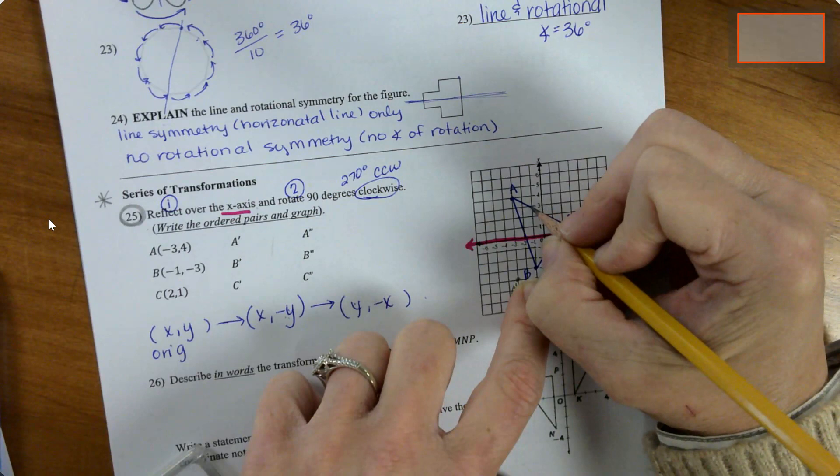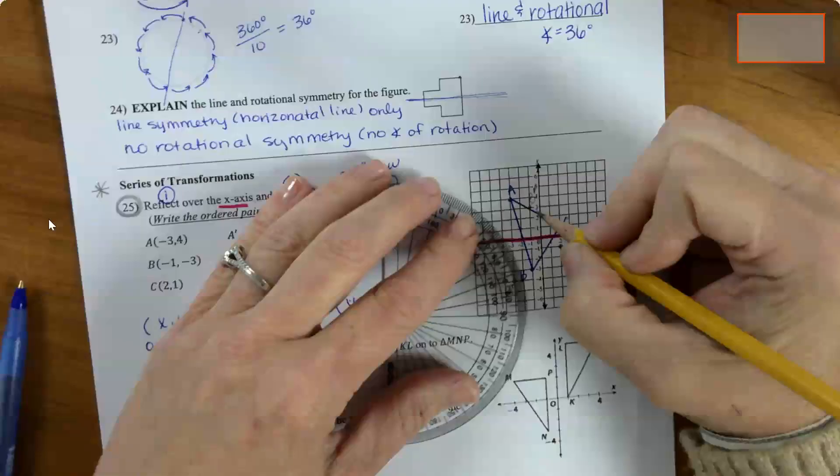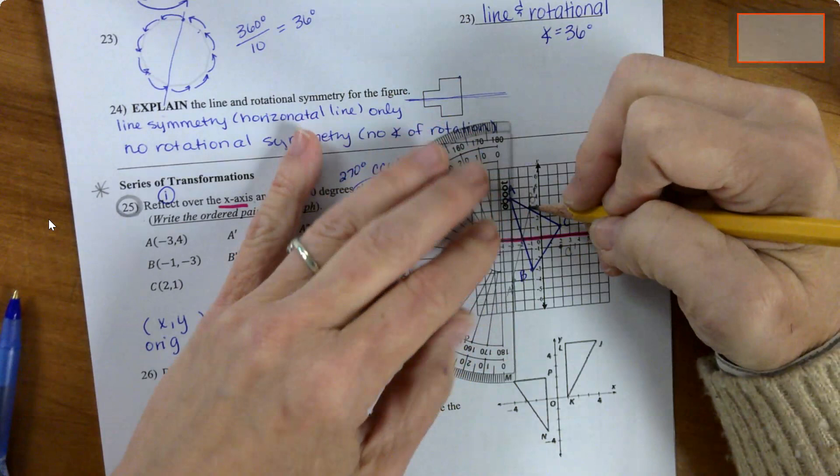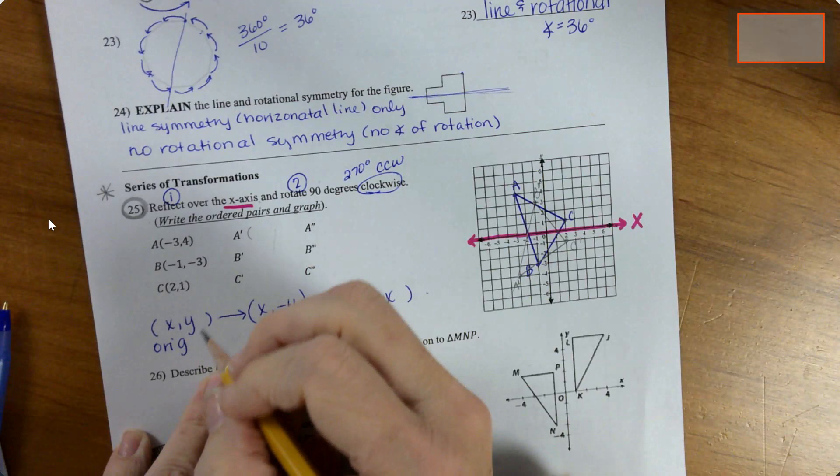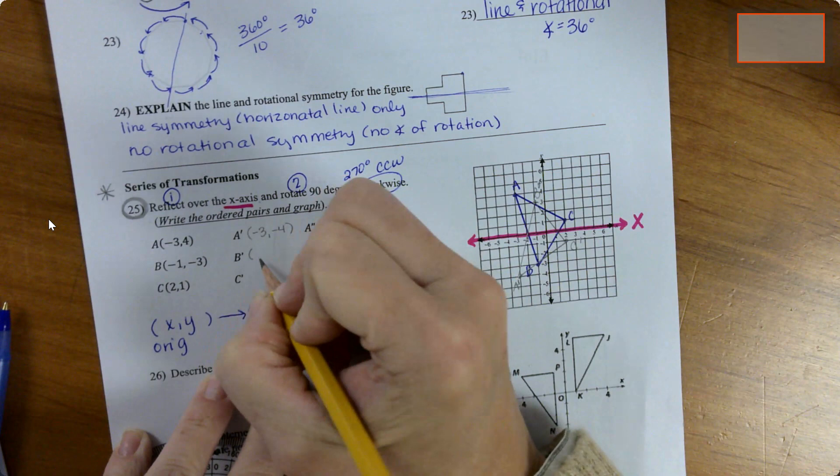So I'm gonna draw it. And then while I have limited stuff on my graph, I'm gonna write those down. So I've got negative 3, negative 4. I've got negative 1, positive 3, and 2, negative 1. And you can see all of the y values change their sign.